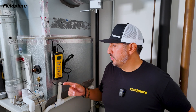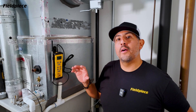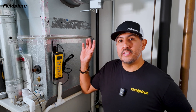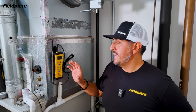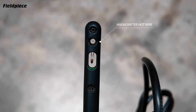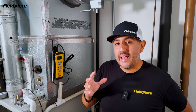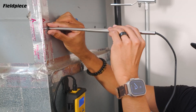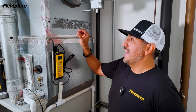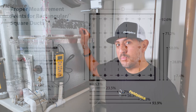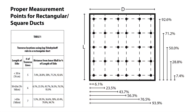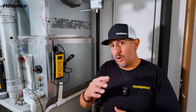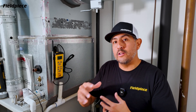The FieldPiece SCA2 is an induct hotwire anemometer. An anemometer is a tool that measures air velocity, and the SCA2 has an anemometer sensor — the hot wire — and another sensor to measure temperature. In order to calculate and measure CFM with the SCA2, we're going to perform a process called the duct traverse, which means we're going to take a bunch of air velocity measurements in the cross section of a duct, average those together, and then allow the tool to convert that air velocity into a CFM volume.